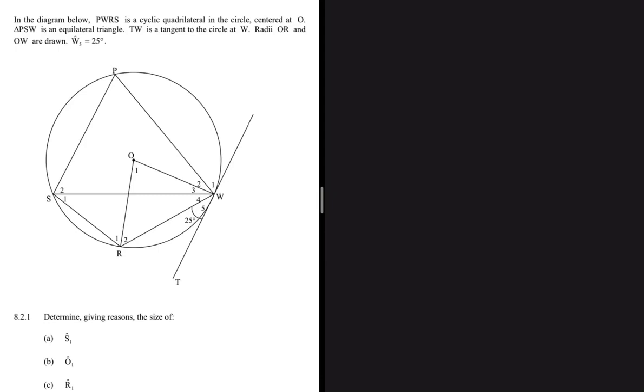PWRS is a cyclic quadrilateral, so I'm writing down cyclic quad. PSW is an equilateral triangle. When the triangle is equilateral, all the angles are equal. The only way all the angles can be equal is if all the angles are equal to 60 degrees.